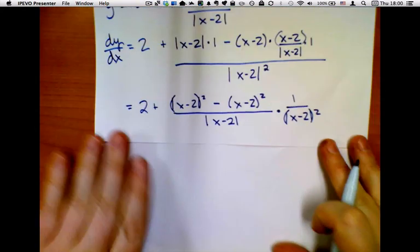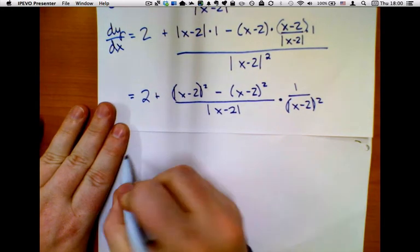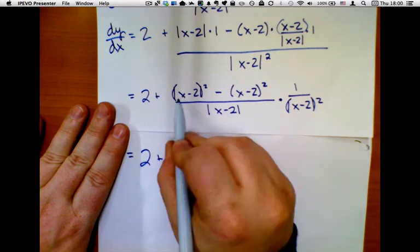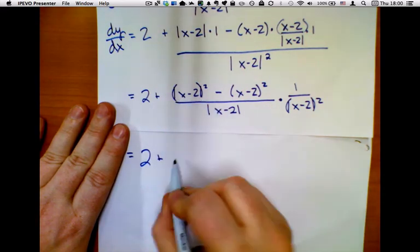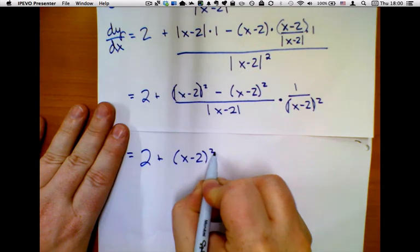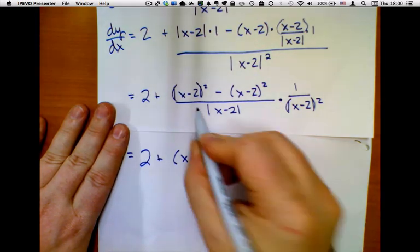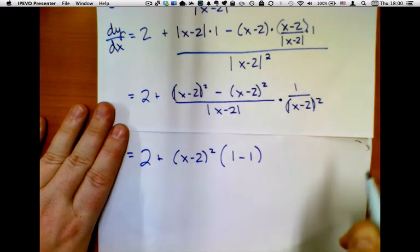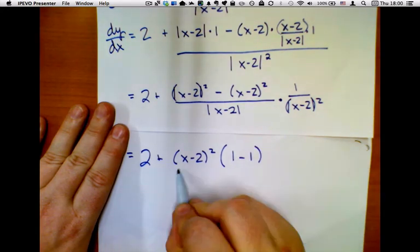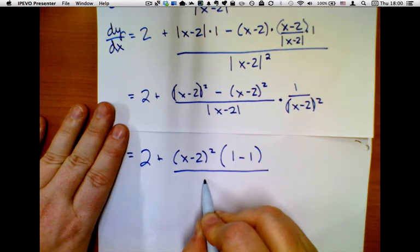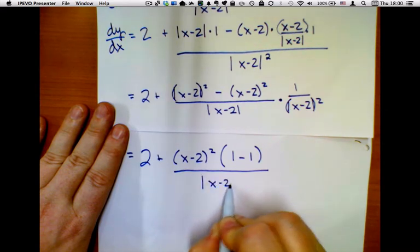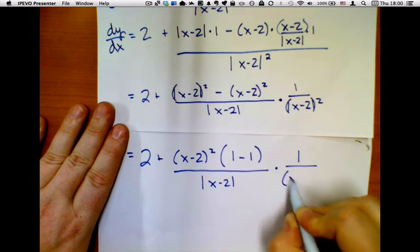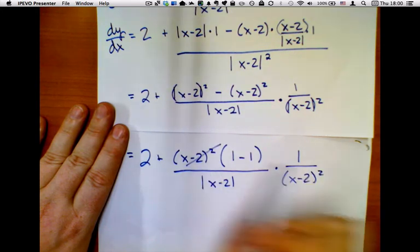So we have 2 plus. I'm going to factor out an x minus 2 quantity squared. And what I have left is 1 minus 1, which is 0, over the absolute value of x minus 2 times 1 over x minus 2 quantity squared. Cancel and cancel.